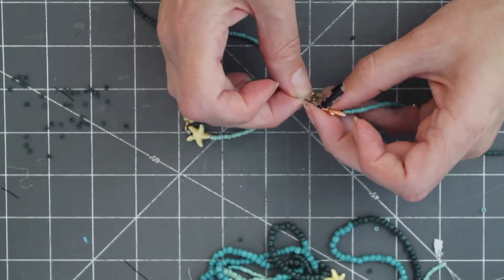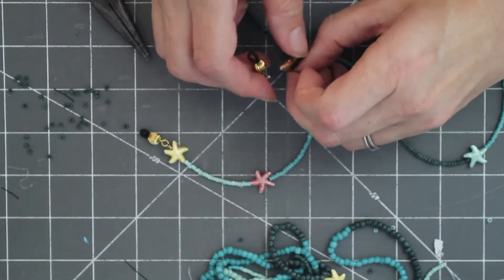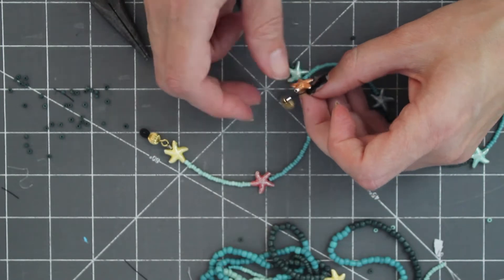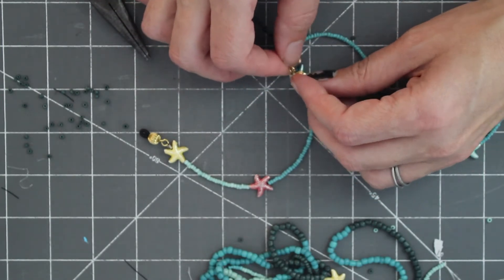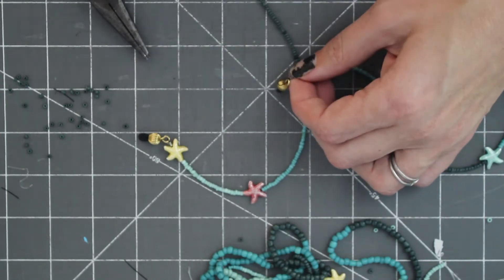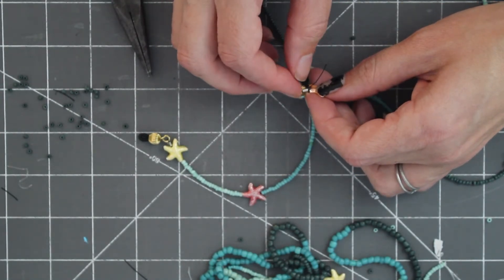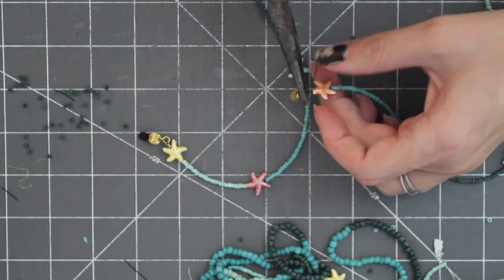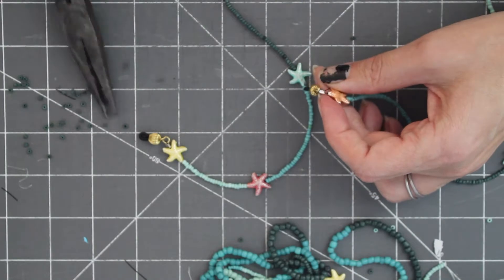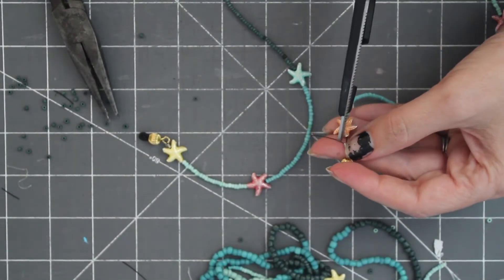Then put the end into the crimp bead. And this is where it gets a bit challenging. It's okay that it's a little loose. But, like I said, the closer you can get it to where there's no room moving around, the better. Pliers, apply pressure, and then cut off the excess.